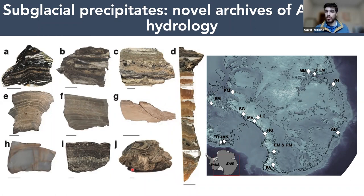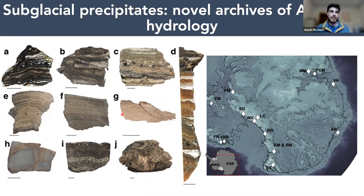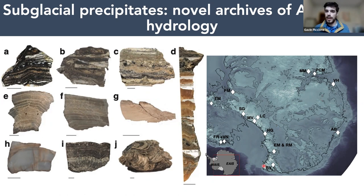As some of you might know, I'm a geochronologist, and I have dated many of these samples. Some of the youngest samples are around 10,000 years, and the oldest samples we've dated are up to six and a half million years old. So they're archives from a long period of time at the base of the ice sheet, growing over periods of hundreds of thousands of years. I also have this map to give everyone a sense of where in Antarctica we have samples from — a lot from along the Transantarctic Mountains, but also from some areas on the edge of the ice sheet.